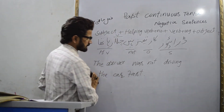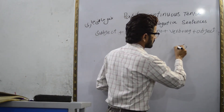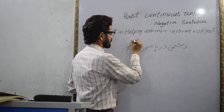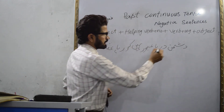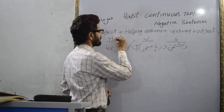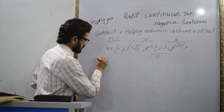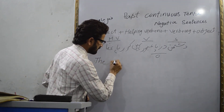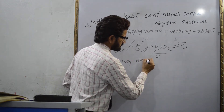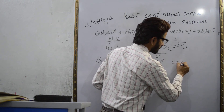Ye baat clear hogi. Ek aur sentence kar lete hain practice ke liye. Dushman darya aboor nahi kar raha tha. Dushman isme subject hai, aboor karna isme verb hai, 'raha tha' helping verb hai jo past continuous show kar raha hai, aur object isme river hai. Translated to English: The enemy was not crossing the river.